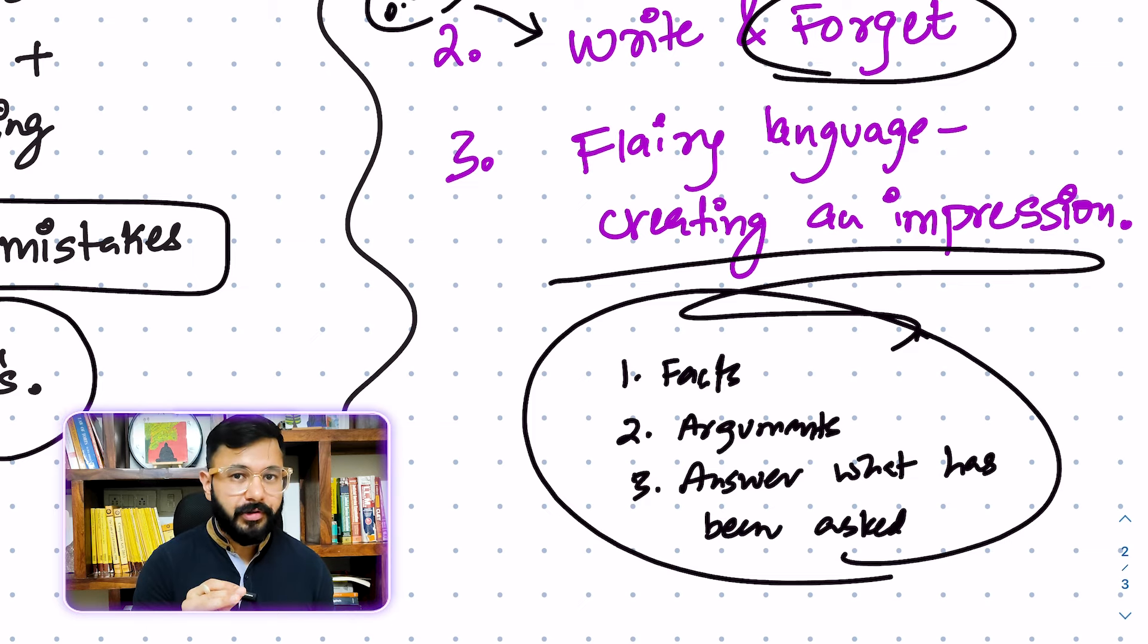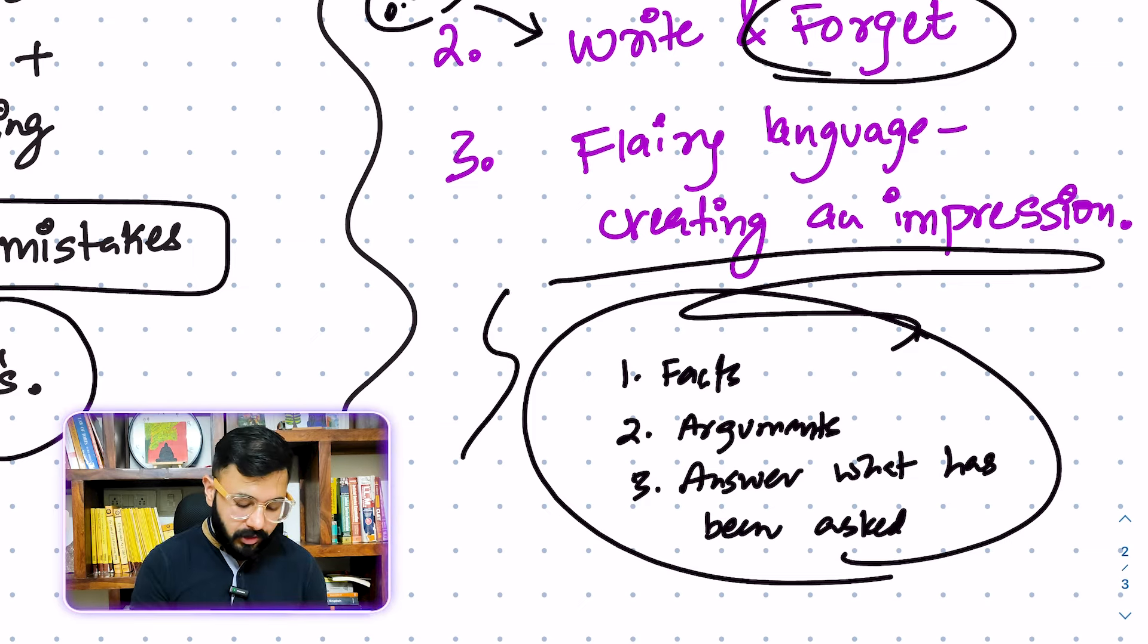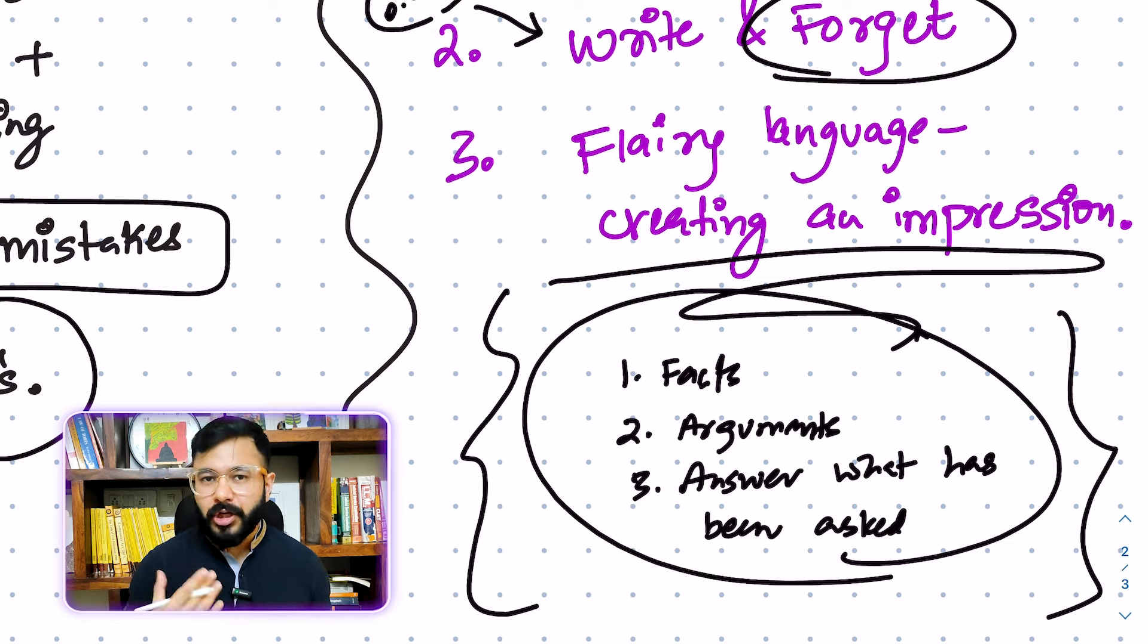If you do this, if you change the way you think around answer writing by not trying to impress the examiner, but by trying to answer the question, by bringing out hard facts that can strengthen your own argument, then automatically that pressure will not be there anymore of writing for somebody else. You will start writing these answers for yourself because now you know that you're trying to be honest in an answer and you're trying to see for yourself whether you know the answer to a question or not.